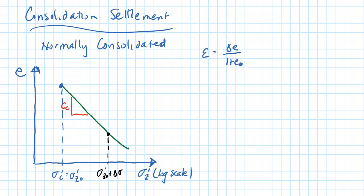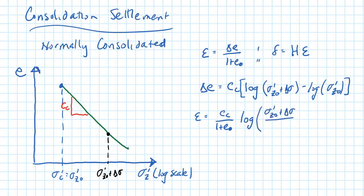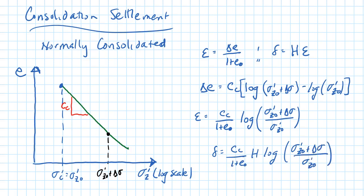To find the strain in the soil layer, the volumetric strain equals the change in void ratio over 1 plus the initial void ratio E0. The change in void ratio is C sub C times the log of the final stress (sigma-prime-Z0 plus delta-sigma) minus the log of sigma-prime-Z0. So the strain is C sub C over (1 + E0) times the log of the final stress over the initial stress, using the law of logs. Settlement equals that strain multiplied by the layer thickness H.